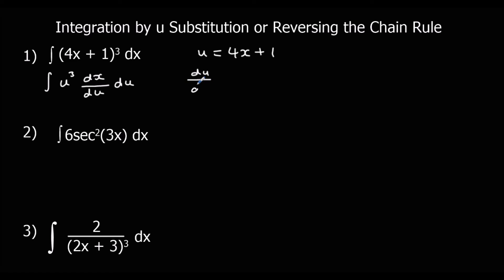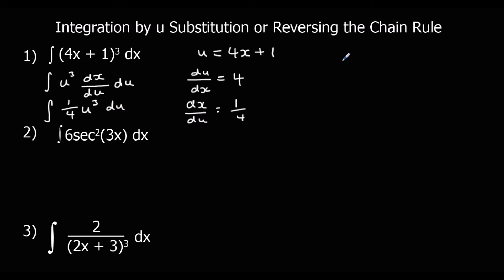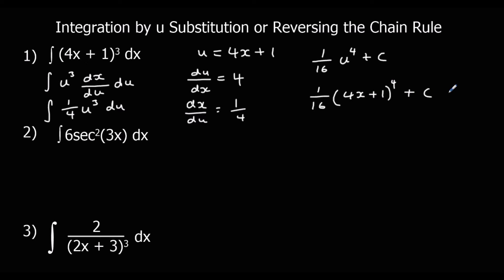du/dx is going to be 4, so dx/du will be one quarter. That gives us the integral of one quarter u cubed with respect to u. Add 1 to the power to get u to the power of 4, divide by the new power — one quarter divided by 4 is one sixteenth. So we get one sixteenth u to the power of 4 plus c, and changing u back to 4x plus 1: one sixteenth times (4x plus 1) to the power of 4 plus c.